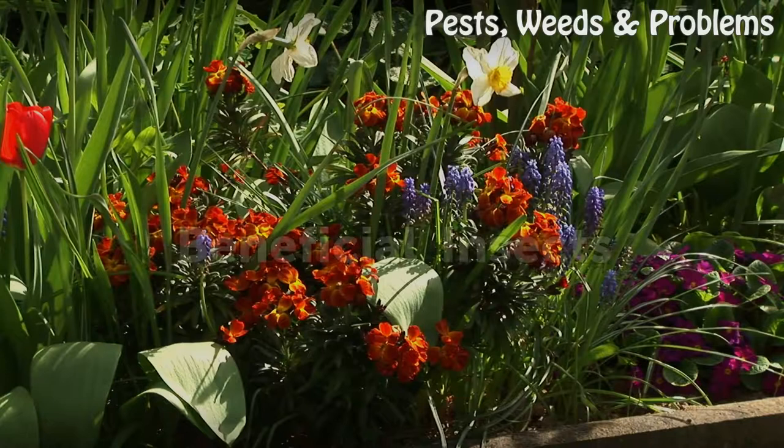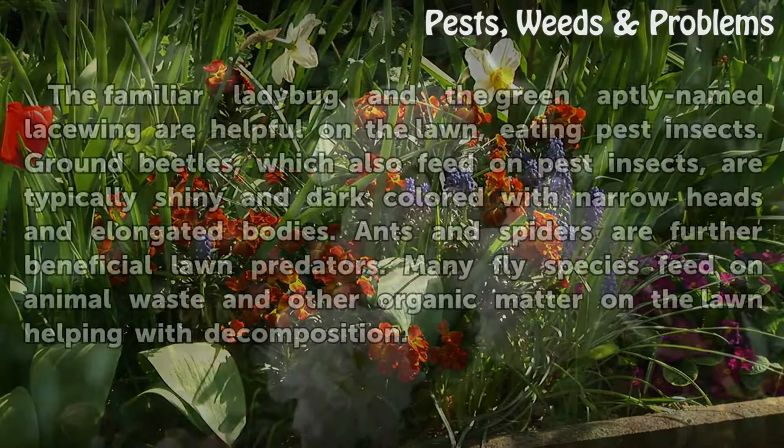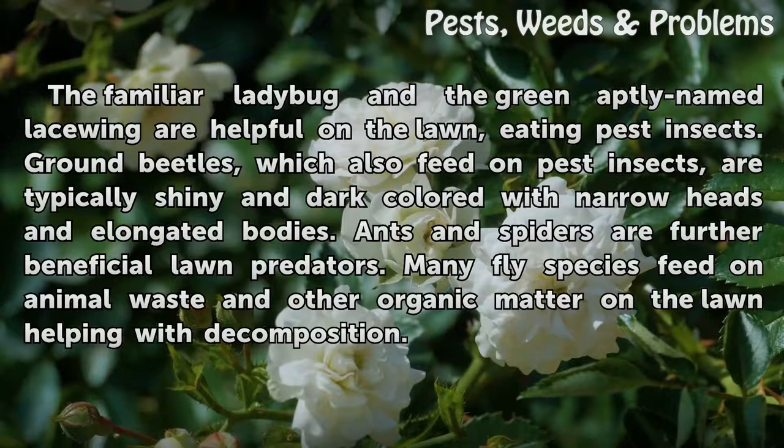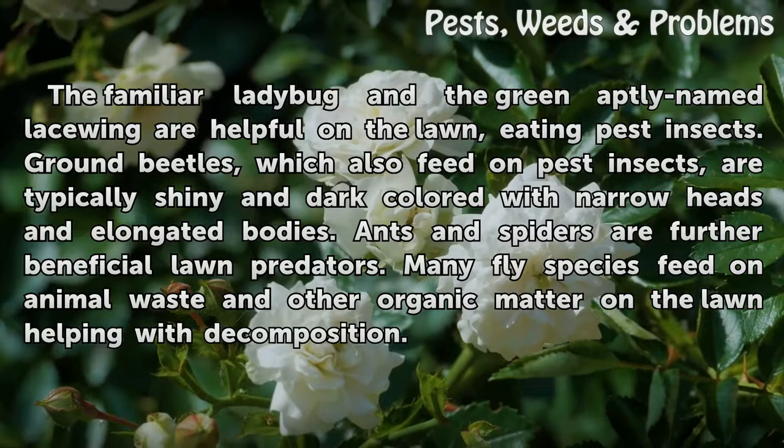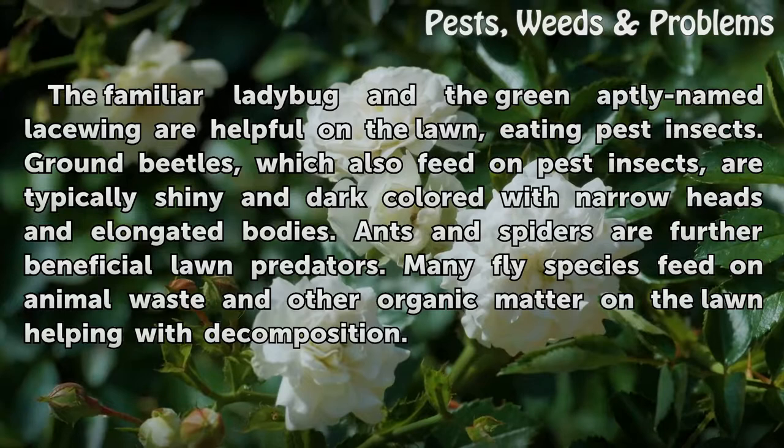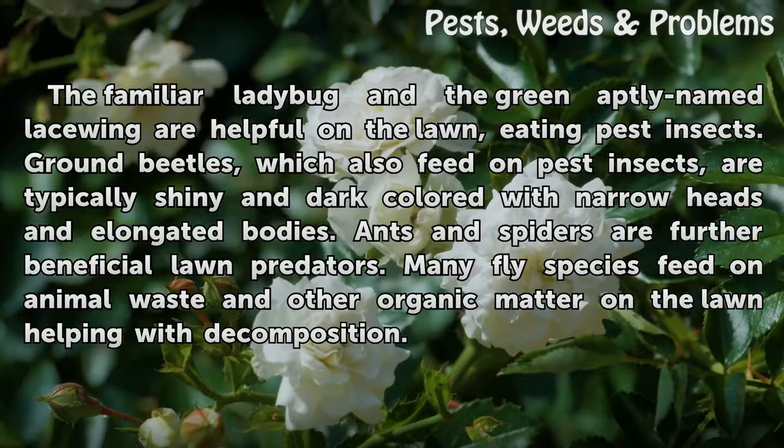Beneficial Insects. The familiar ladybug and the aptly named green lacewing are helpful on the lawn, eating pest insects. Ground beetles, which also feed on pest insects, are typically shiny and dark colored with narrow heads and elongated bodies. Ants and spiders are further beneficial lawn predators. Many fly species feed on animal waste and other organic matter on the lawn, helping with decomposition.